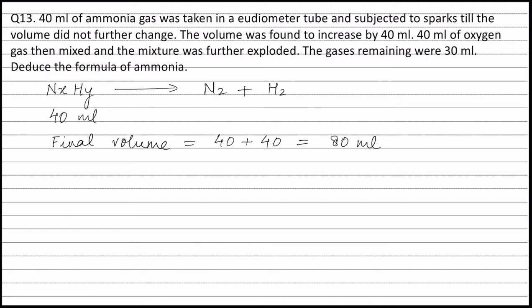Applying the principle of atom conservation on nitrogen atoms: X into moles of ammonia (40) is equal to 2 into moles of nitrogen. From this we get moles of nitrogen equal to 20X. Similarly, applying the principle of atom conservation on hydrogen atoms: Y into moles of ammonia (40) is equal to 2 into moles of hydrogen, giving moles of hydrogen equal to 20Y.